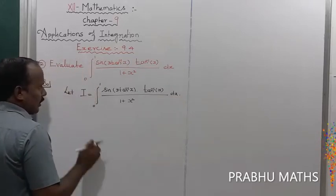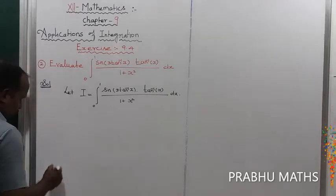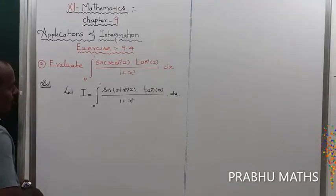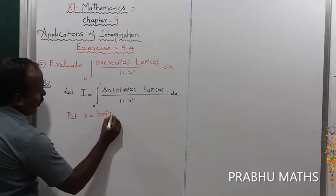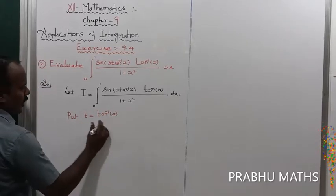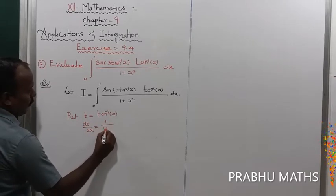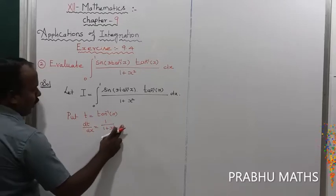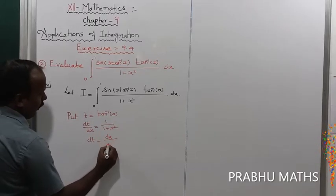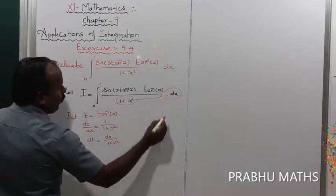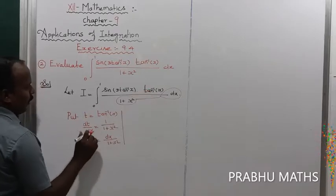First, using the substitution method, put t = tan⁻¹x. Differentiating with respect to x: dt/dx = 1/(1 + x²), so dt = dx/(1 + x²). Therefore dx/(1 + x²) = dt.